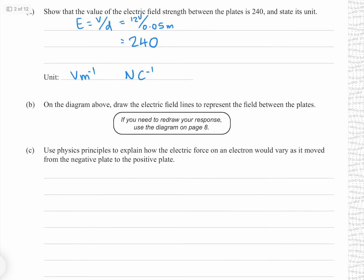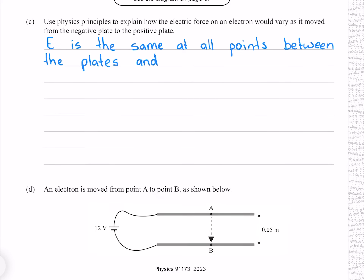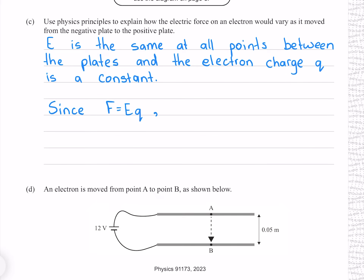So let's write that down. E is the same at all points between the plates, and the electron charge Q is a constant. Since F equals EQ, F will not change.